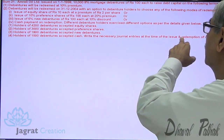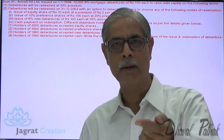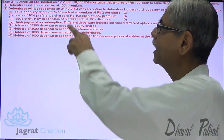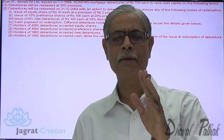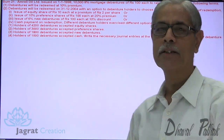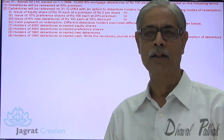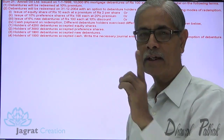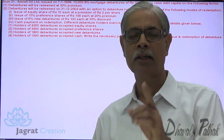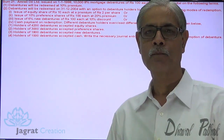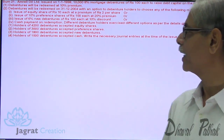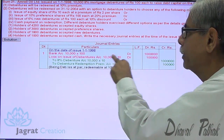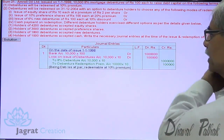Write the journal entries at the time of issue and redemption of debentures. We are required to write down the entry for issue of debentures, that entry will be recorded on 1st January 1998, and we are also required to write down the redemption entry, that will be on 31st December 2004. For writing the issue entry: Bank account debit 10,000 into 100; loss on redemption is 10%, so loss on redemption per debenture is Rs. 10, so 10,000 into 10 is the loss on issue of debentures account debit; to 8% debentures account credit.